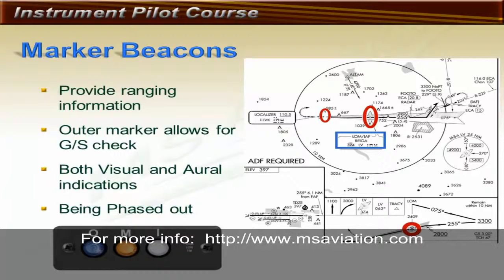There are three types of marker beacons: outer, middle, and inner. In the cockpit, the pilot can identify marker beacons in two ways. First, there is a corresponding light for each type: the outer marker is blue, the middle marker is yellow, and the inner marker is white. Second, there is an aural indication — the outer marker emits long tones, the middle marker emits a short then longer tone at a quicker pace, and the inner marker emits very short tones rapidly. Where radar service is available, marker beacons are being phased out of ILS systems.